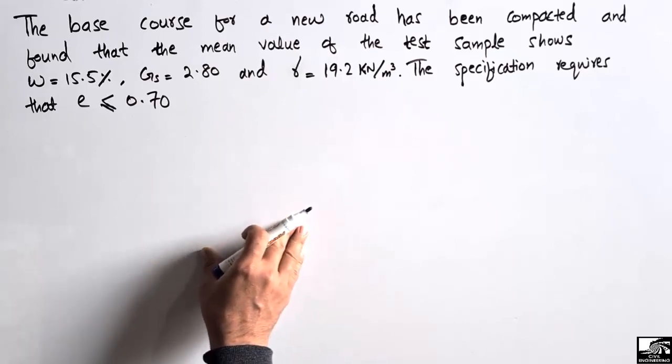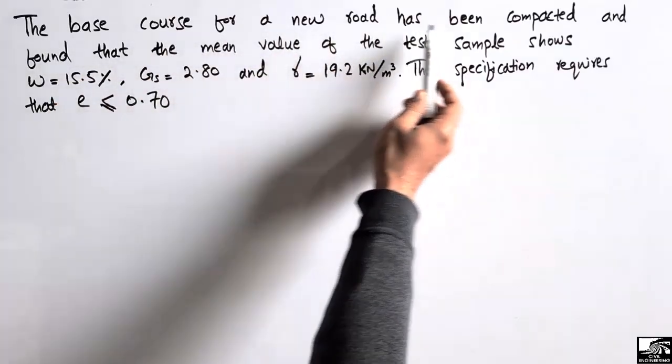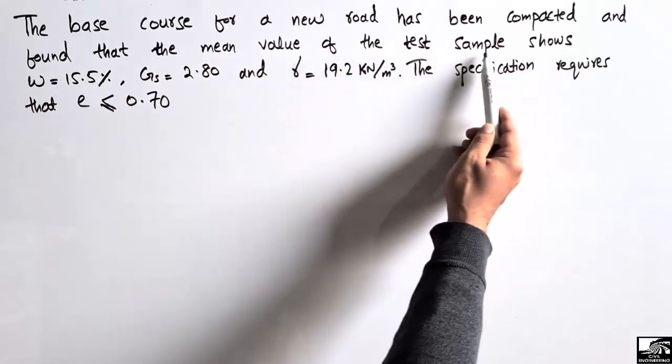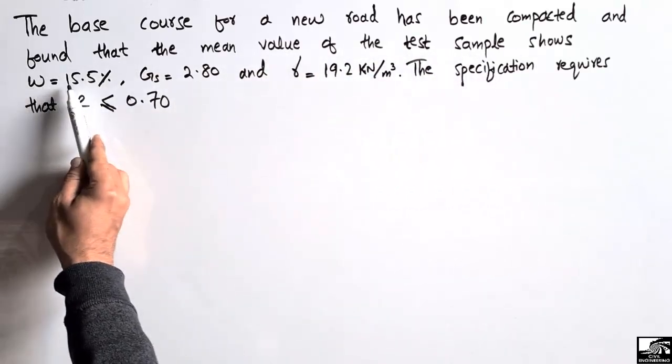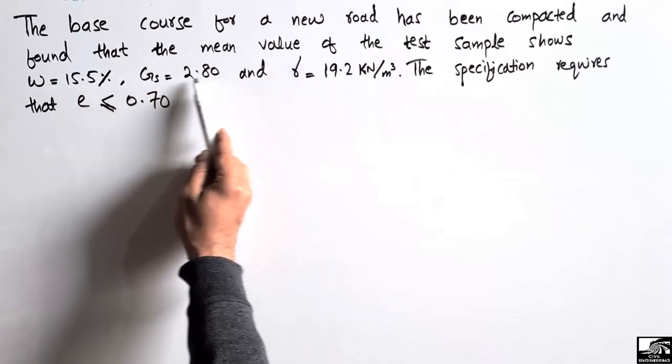The problem states that the base course for a new road has been compacted and found that the mean value of the test sample shows water content of 15.5%, specific gravity Gs = 2.80, and γ = 19.2 kilonewtons per cubic meter.